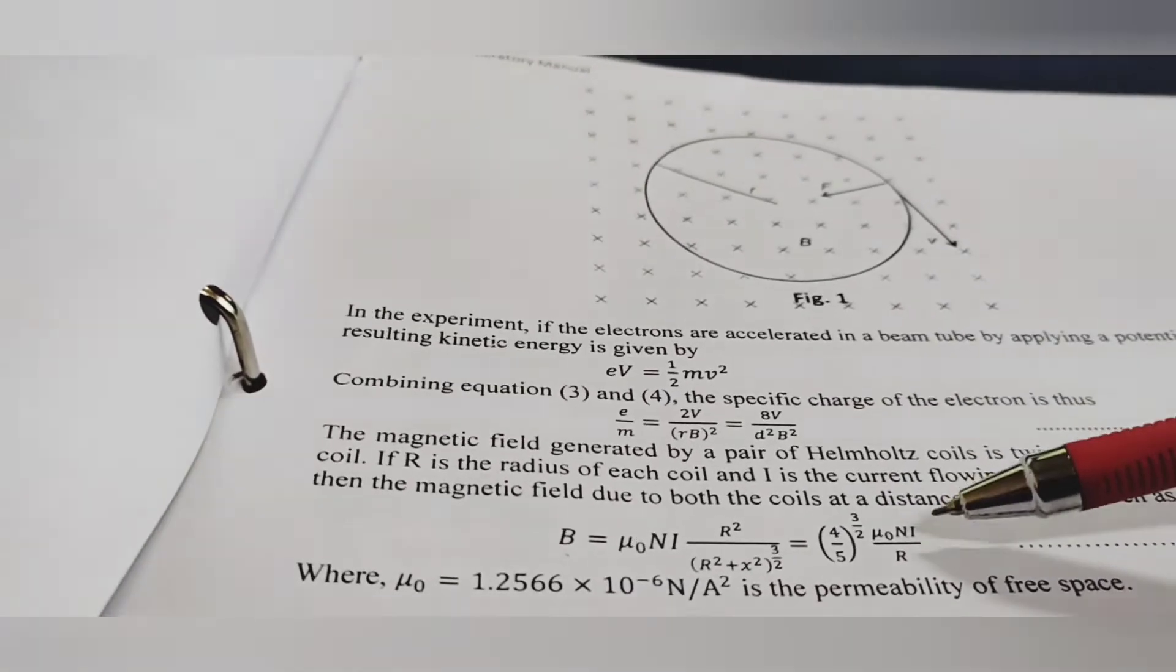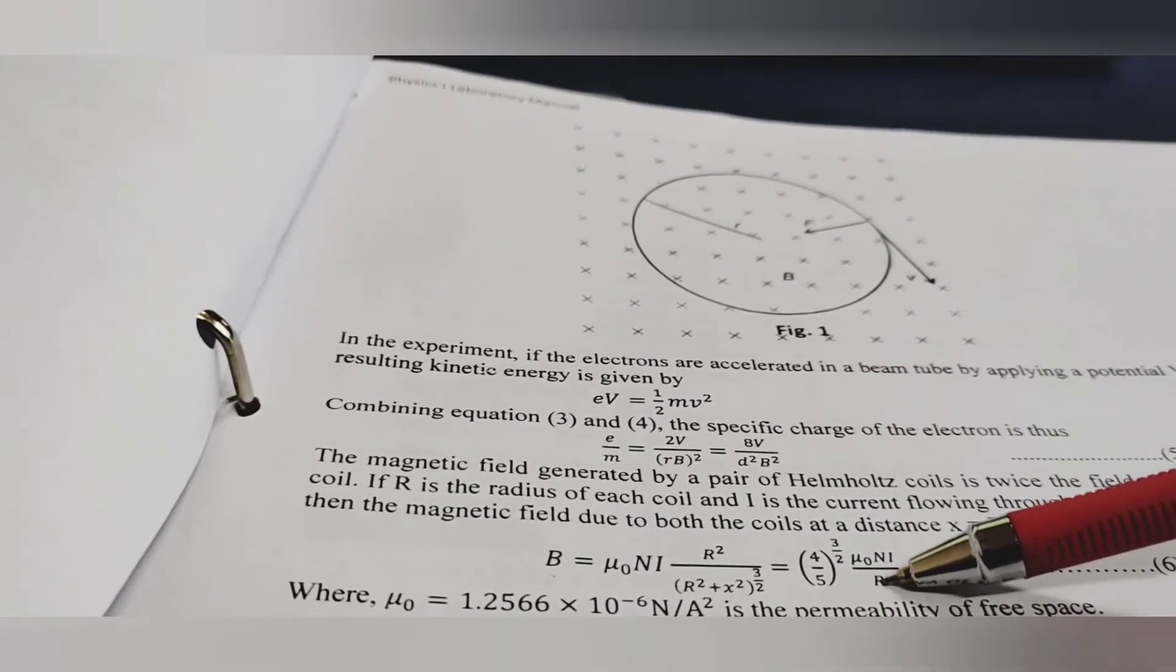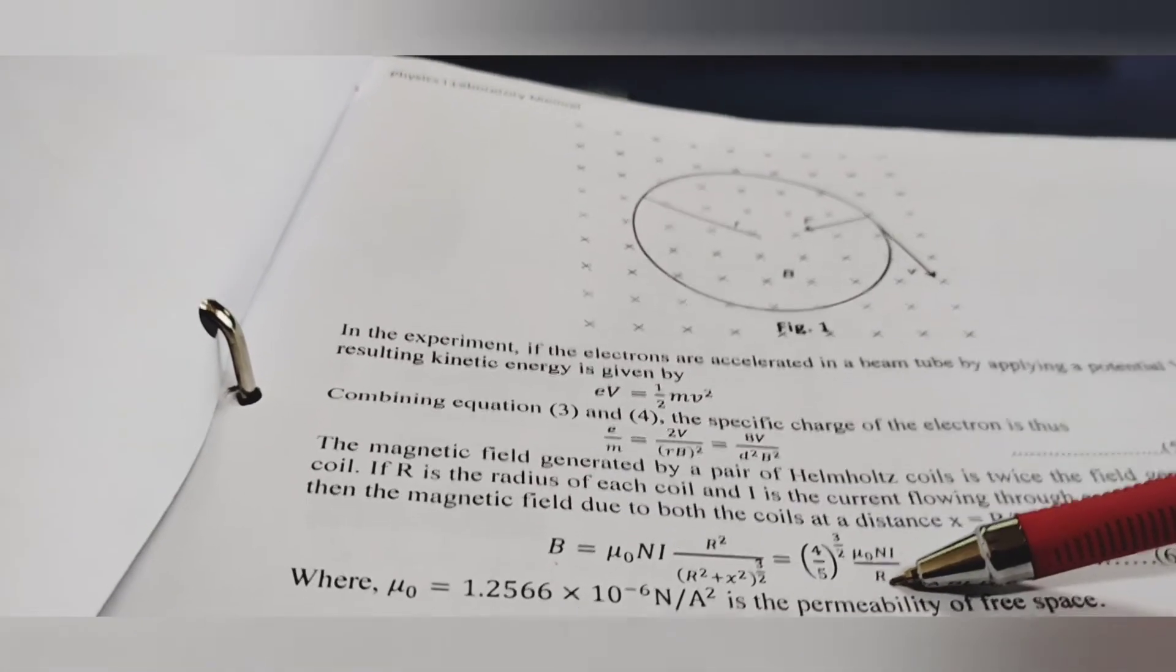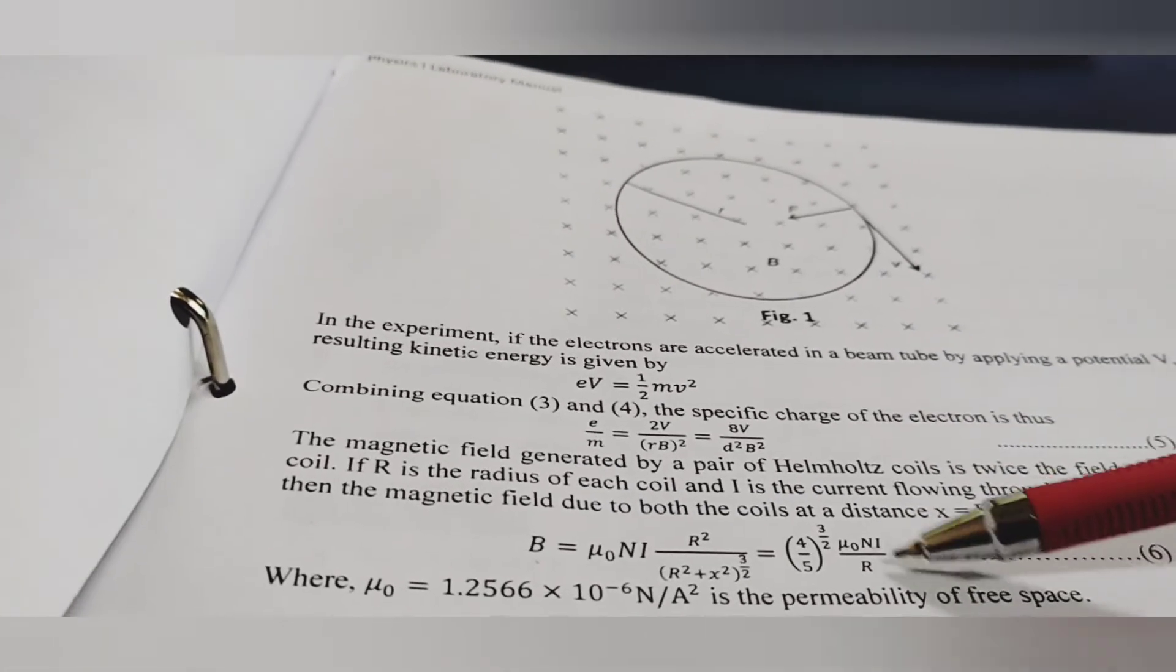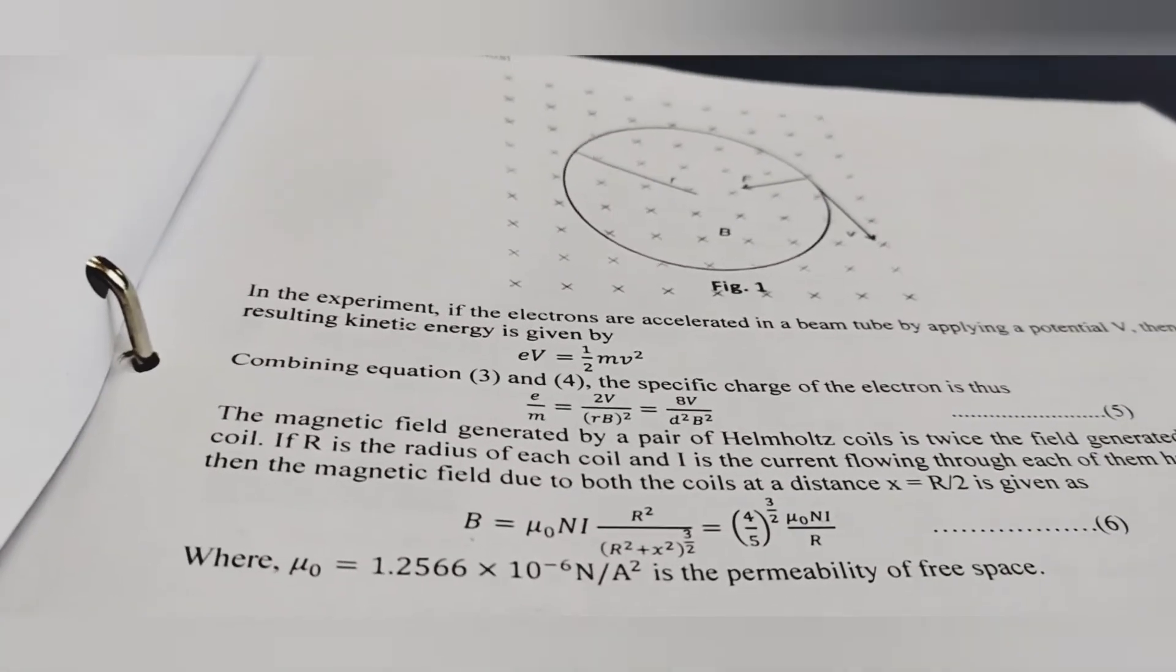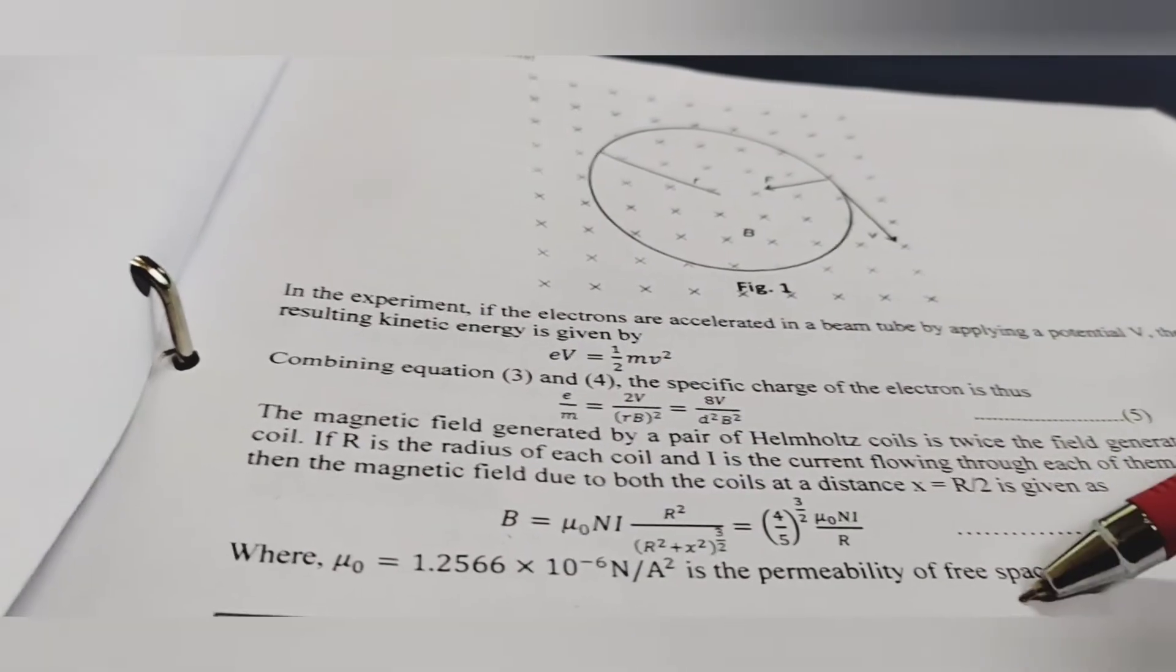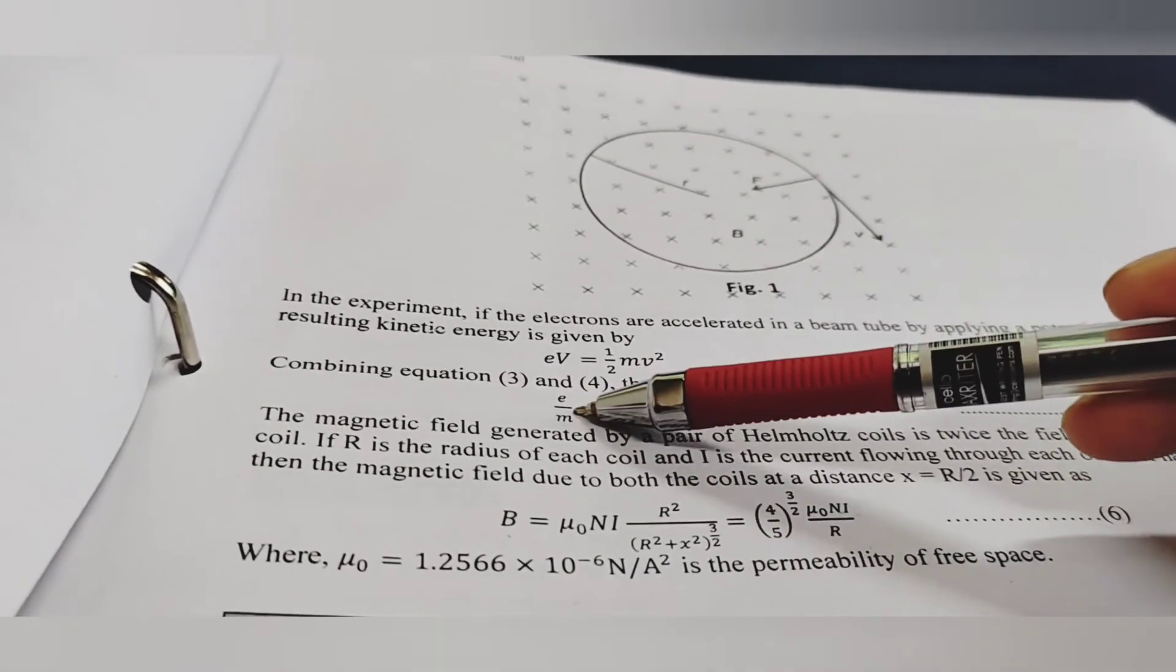I is fixed, current is fixed, that is 1. And capital R is radius of Helmholtz coil, that is 0.14 meter. So now you can easily calculate capital B and then you can calculate e by m.